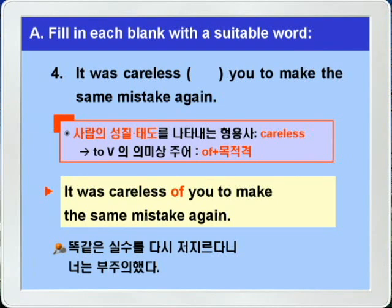'It was careless of you to make the same mistake again.' 부주의했다. 당신이 똑같은 실수를 다시 하다니. 이런 형용사가 나올 때는 of plus 목적격, 그 다음에 투부정사 형식이 된다는 거 꼭 기억해야겠습니다.